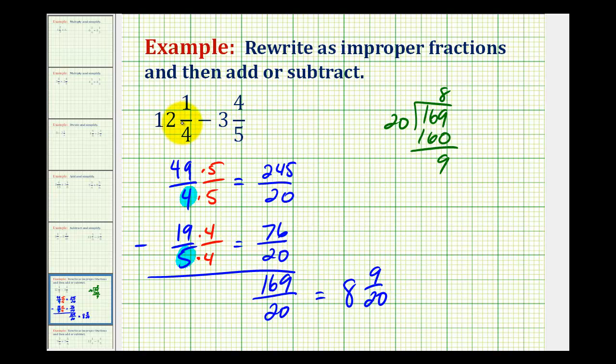So by converting these mixed numbers to improper fractions, we can avoid having to borrow, even though in most cases we have to convert the difference back to a mixed number.